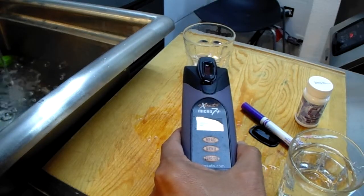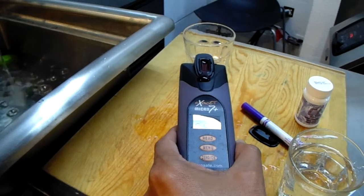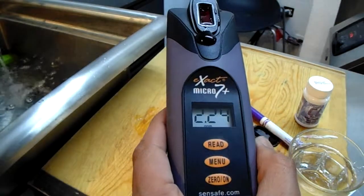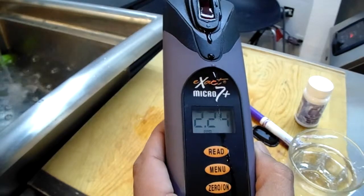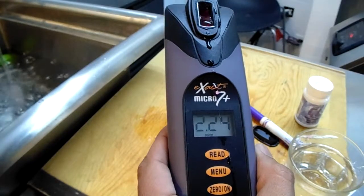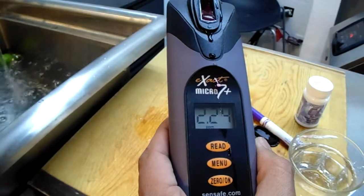So now this is going to read the ozone concentration in water, which is what you see here is 2.24 concentration of dissolved ozone at the point of use.